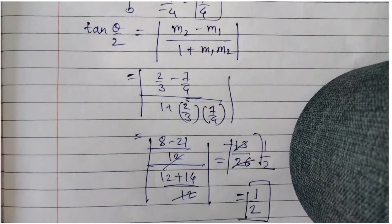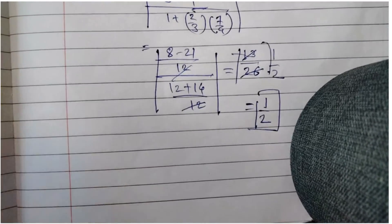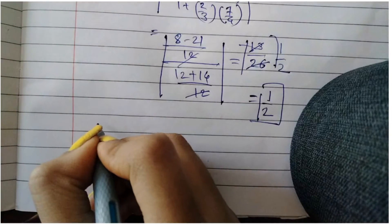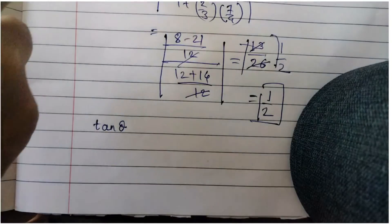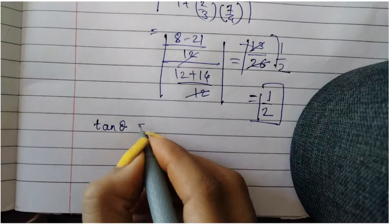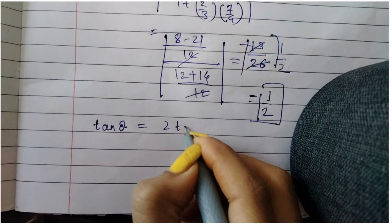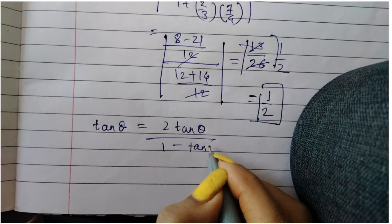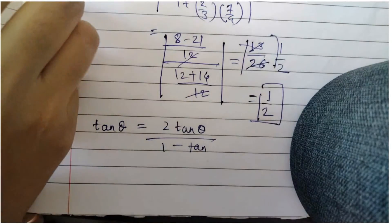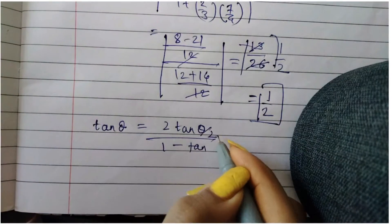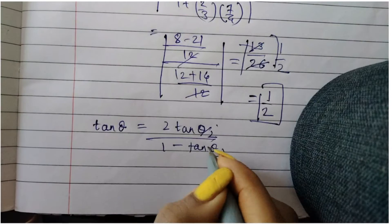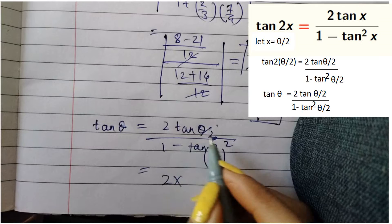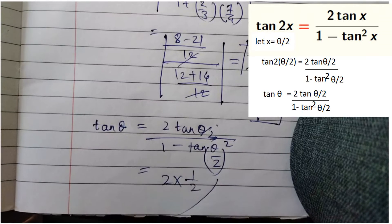In the question they have asked for the value of tan θ. We use the double angle formula: tan(2·(θ/2)) = 2·tan(θ/2) / (1 - tan²(θ/2)). Substituting tan(θ/2) = 1/2: 2·(1/2) / (1 - (1/2)²).